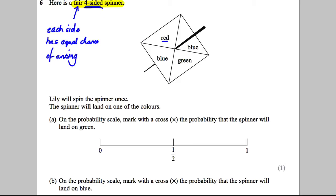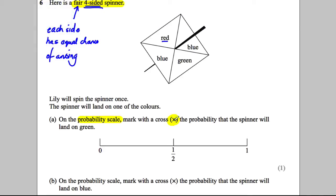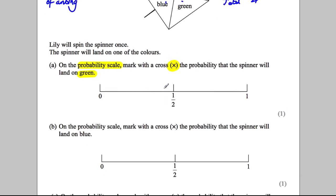Lily will spin the spinner once. The spinner lands on one of the colours. Now we're asked to, on the probability scale, mark with a cross X the probability the spinner will land on green. Well, we've got one green out of one, two, three, four potential options — so the total is four. So it's one out of four — it's a quarter. Now, a quarter is halfway between zero and a half; it's half of a half. So a quarter would be here, and we'd mark our X there.